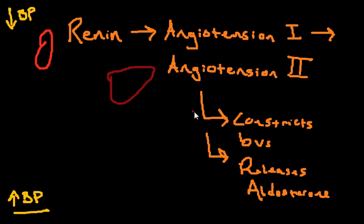Angiotensin 2 does two things. Number one, it constricts blood vessels, and number two, it releases aldosterone. Both of these things increase the blood pressure.